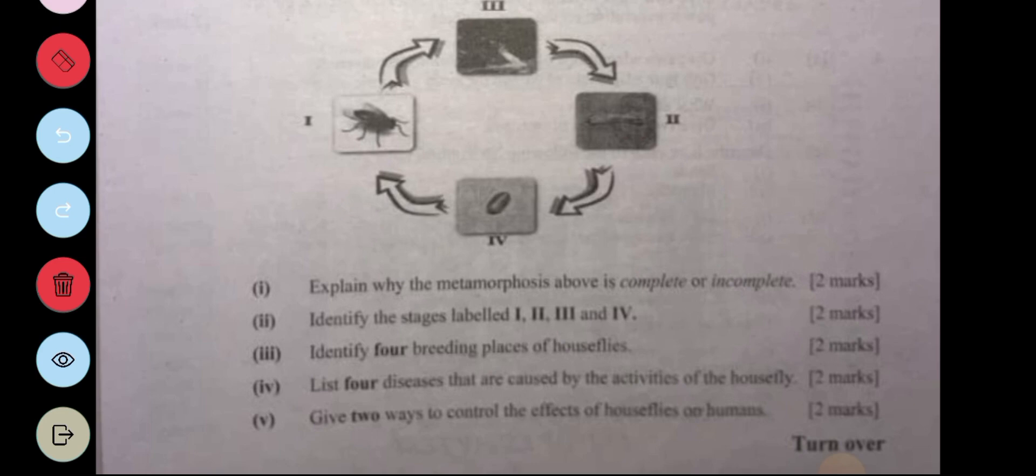larva, pupa, and adult. The diagram above illustrates egg, larva, pupa, and adult, so it's a complete metamorphosis. Part two: Explain the stages one, two, three, and four.